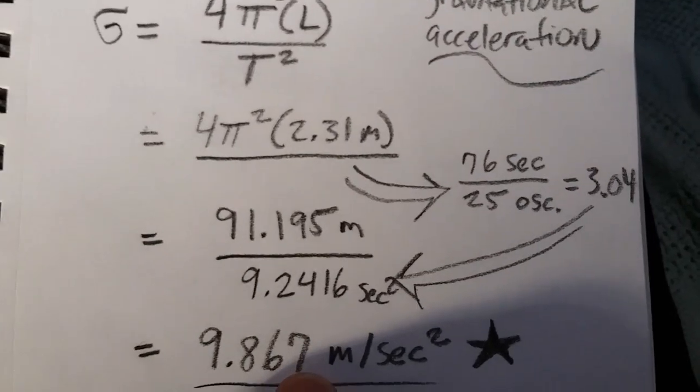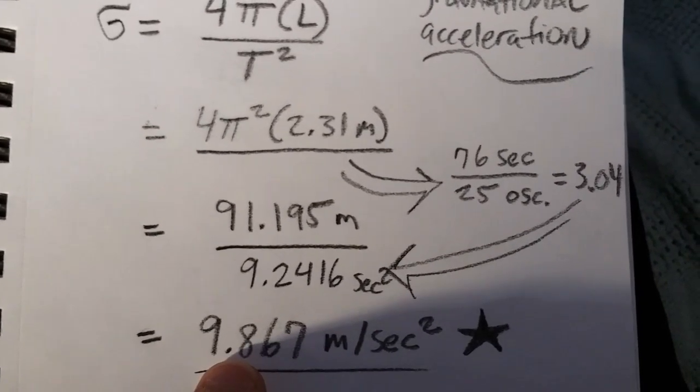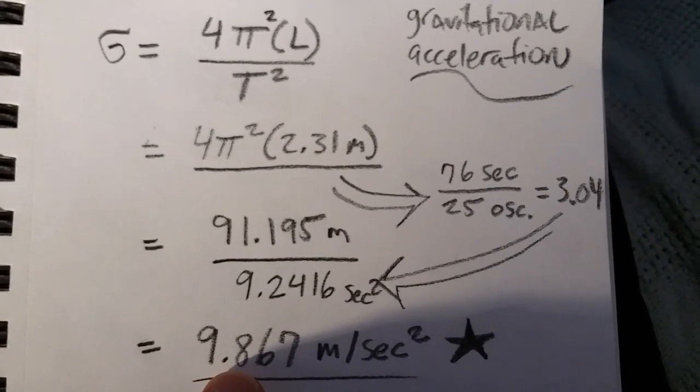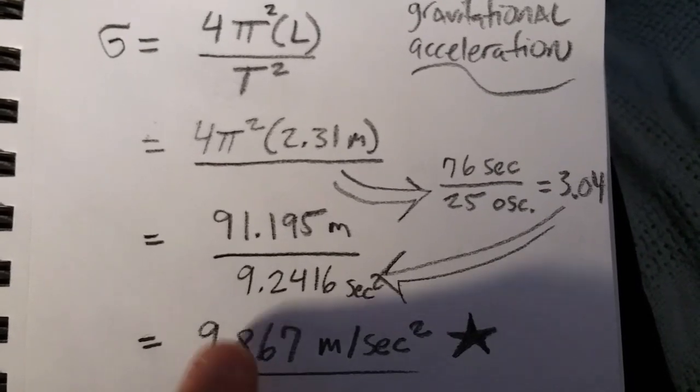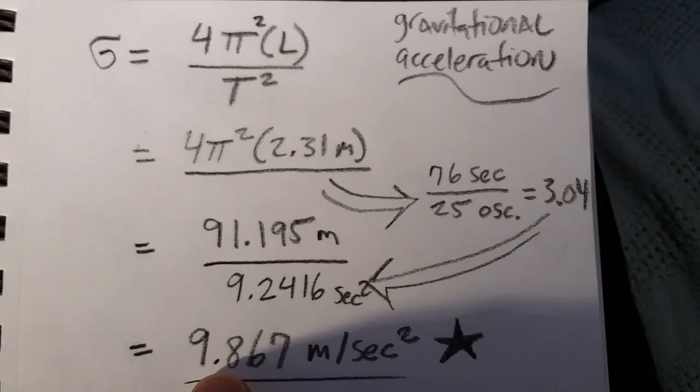But with a simple pendulum, you can discover this thing for yourself. If that's our Earth's gravitational constant, different celestial bodies will have different gravitational constants. But please post your comments below, and thanks for watching.